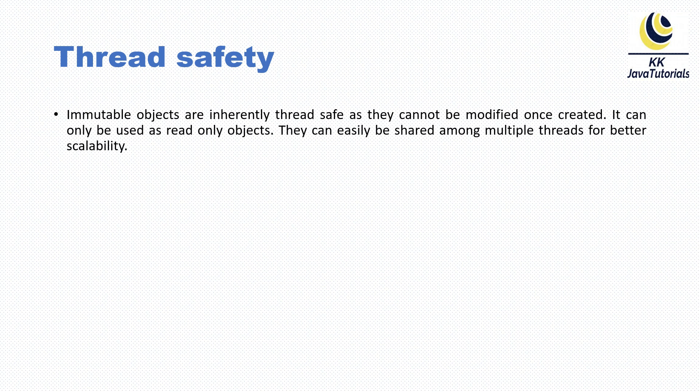The second reason is thread safety. Immutable objects are inherently thread-safe — they cannot be modified once created. They can be used as read-only objects and can easily be shared among multiple threads for better scalability. Strings are immutable so they can be shared between multiple threads without any fear. If any thread tries to modify a string, the existing object cannot be modified — a new copy of the object will be returned. So strings are very thread-safe, and that is the second reason to make the String class immutable.